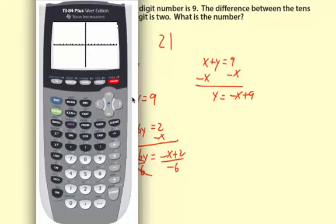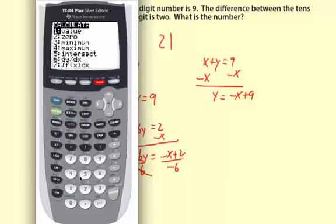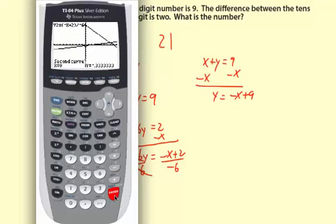Let's take a look at the graph. And there you can see your two linear equations. They do have an intersection point, and we'll calculate that. Second calc, or f4, option 5 is intersect, and then I'm just going to follow the prompts, hitting enter. X equals 8, y equals 1.